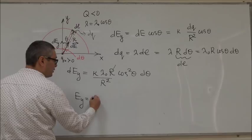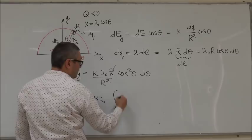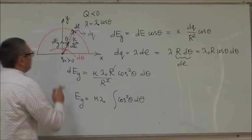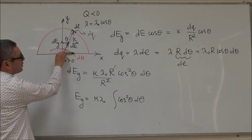And so, then you can calculate for EY. EY is equal to K lambda 0 integral of cos square theta D theta. And if you look at this, remember theta is measured from the Y axis.